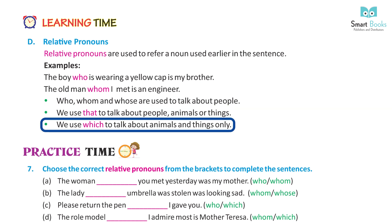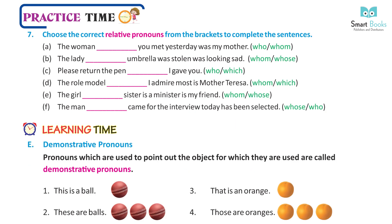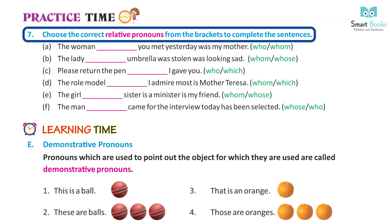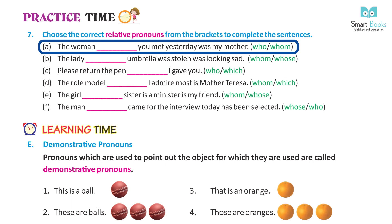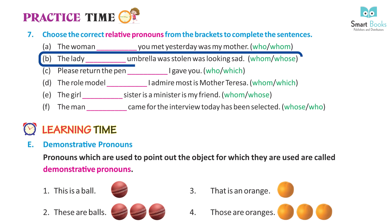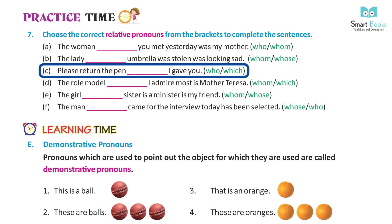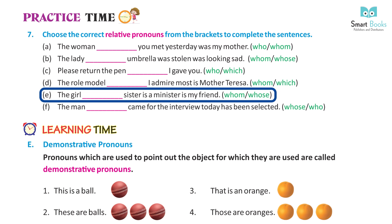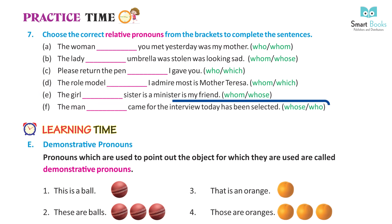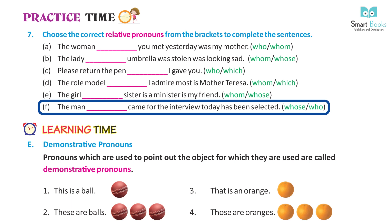Practice time — choose the correct relative pronouns from the brackets. A: The woman whom you met yesterday was my mother. B: The lady whose umbrella was stolen was looking sad. C: Please return the pen which I gave you. D: The role model whom I admire most is Mother Teresa. E: The girl whose sister is a minister is my friend. F: The man who came for the interview today has been selected.